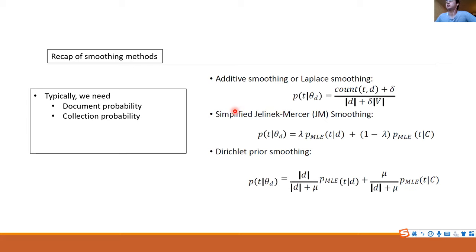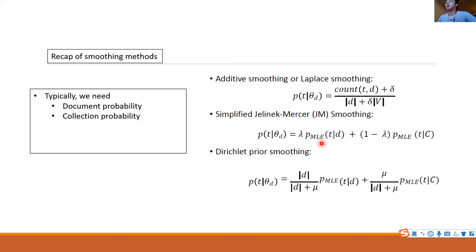In the lecture, the professor already introduced several retrieval methods, for example some smoothing methods like the JM method or the Dirichlet method. These methods typically contain two parts: the first part is the term probability in the current document, and the other part is the term probability in the whole collection. With these two parts we can use the smoothing method to do faster retrieval.